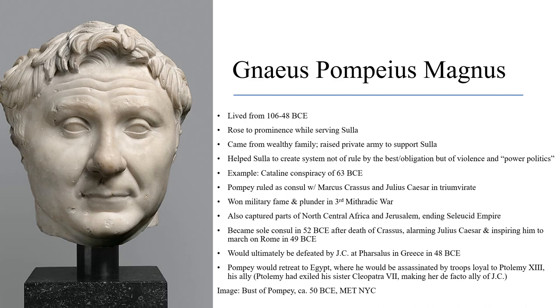Ptolemy XIII was the brother of Queen Cleopatra VII, who was an ally of Julius Caesar. So in some ways, by being the enemy of Cleopatra, Ptolemy was sort of an ally of Pompey — making his decision to have Pompey assassinated all the more troubling. Julius Caesar was very troubled to learn of Pompey's assassination by Ptolemy; even though Pompey was his enemy, he felt it was dishonorable. This is a very famous bust of Pompey, which can be found at the Metropolitan Museum of Art in New York City.